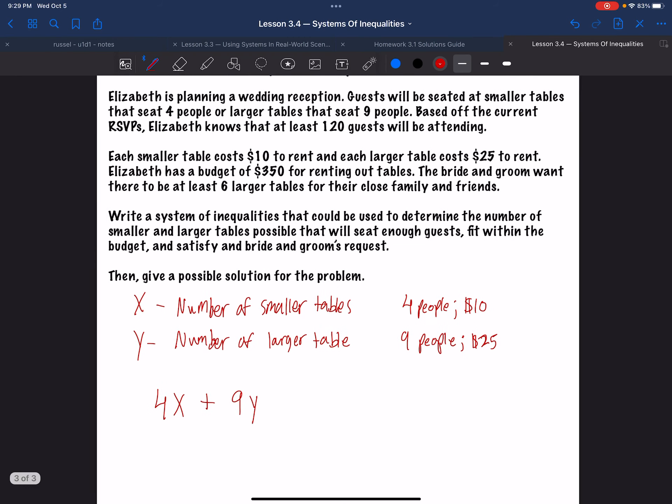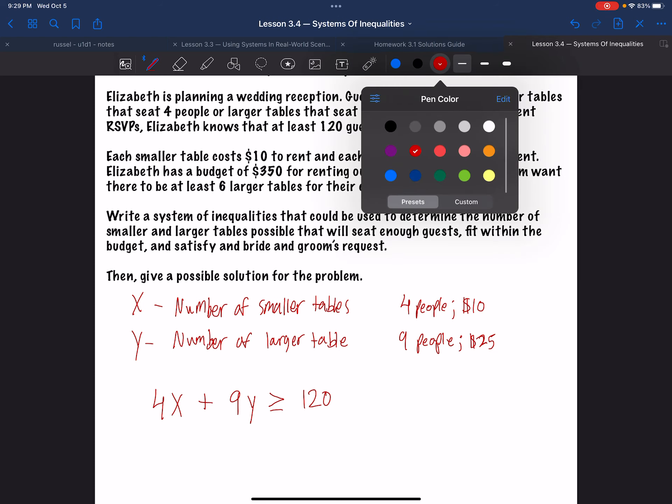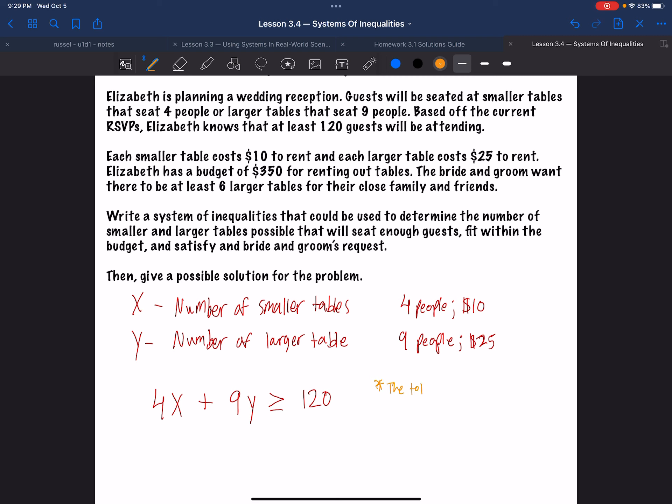So let's set up our system of inequalities. Let's go back up. The first one, the first condition, at least 120 guests will be attending. So I need to figure out some equation or inequality that represents the total number of guests. Well, each table seats some amount of people. So if I'm at a smaller table, each smaller table, if you multiply that by four, that tells you the number of people seated at smaller tables. If you take the number of larger tables, y, and multiply that by nine, that tells you the number of people sitting at larger tables. Adding those together gets you your total number of people seated at either table. And you want this total number to be at least 120.